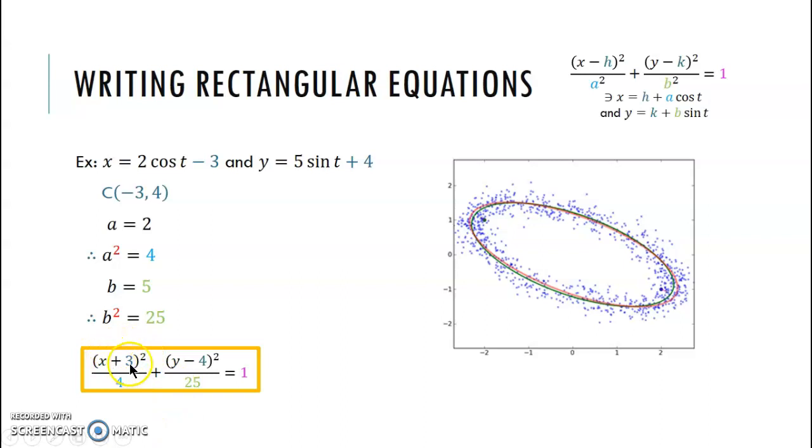Now again, you want to understand why this changed to a plus three when it's a negative three here. It all comes down to the formula. It's x minus h, so that's going to be x minus a negative three, and minus a negative changes this to a positive. Over here, we have y minus a positive four, so that stays y minus four. And then we have our a squared, which is four, and our b squared, which is 25. And that would be our ellipse right there.